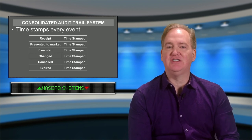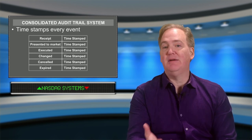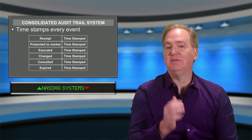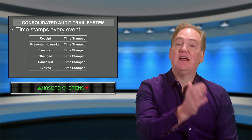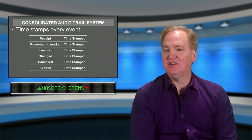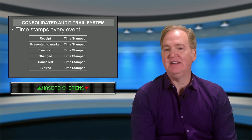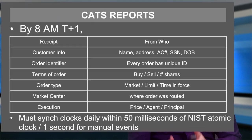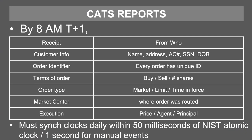If the customer changes the order — perhaps they change the limit price — that would have to be timestamped as well by the CATS system. If the order is canceled or times out, that event is also timestamped. Now let's take a look at some of the information that's going to be recorded and reported by the firm for all CATS reports.